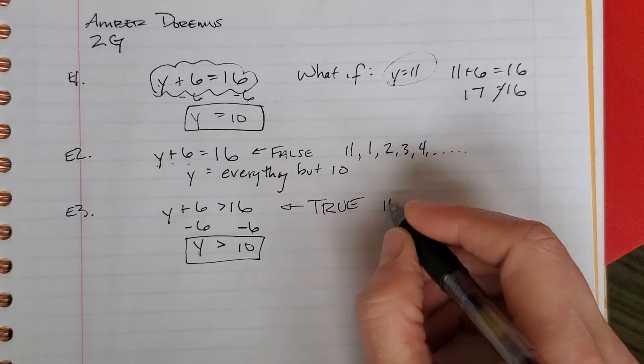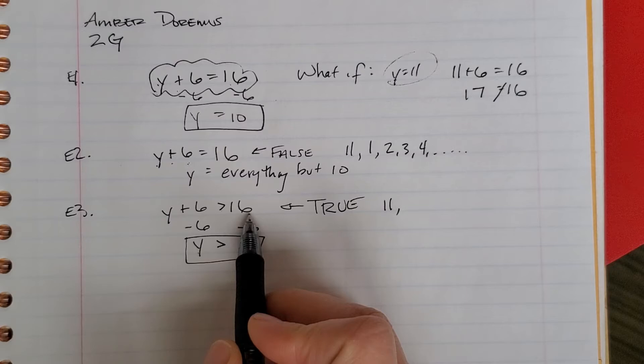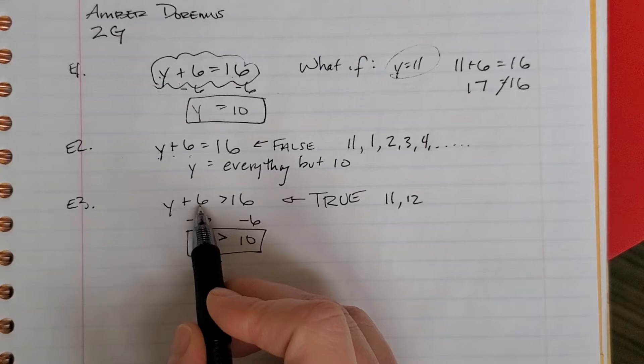Okay, let's try 11. 11 is greater than 10. 11 plus 6 is 17, and 17 is greater than 16. True. 12. 12 plus 6 is 18, and 18 is greater than 16.